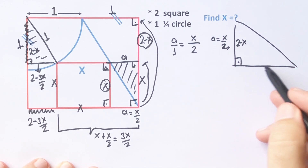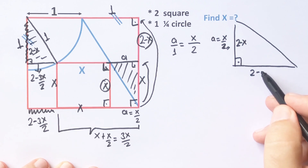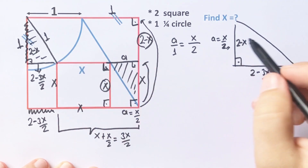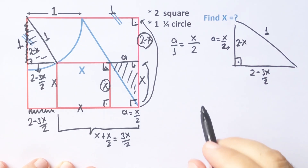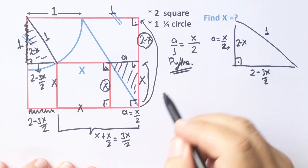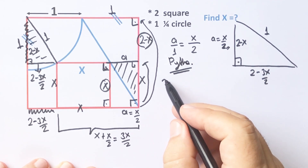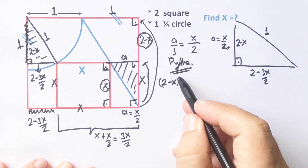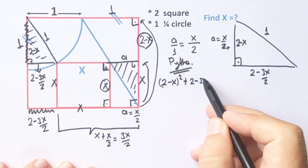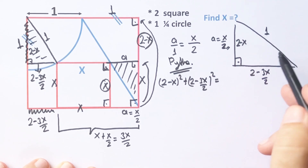If you focus on this triangle, here is two minus x, and here is two minus three x over two, and the hypotenuse is one unit. Applying the Pythagorean theorem for this triangle: